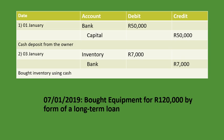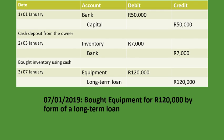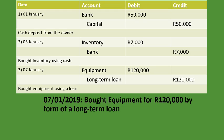On the 7th of January 2019, we bought equipment for 120,000 rand by form of a long-term loan. So we bought equipment but took out a loan in order to buy it. The two accounts are equipment and long-term loan. Equipment is an asset and it increases on the debit side, so we put equipment — 120,000 rand. Then how did we buy the equipment? We bought it using a long-term loan. A long-term loan is a liability, and a liability increases on the credit side. So we put long-term loan — 120,000 rand. Description: bought equipment using a loan.